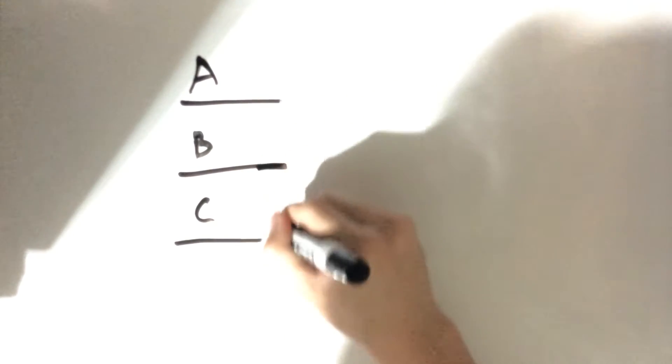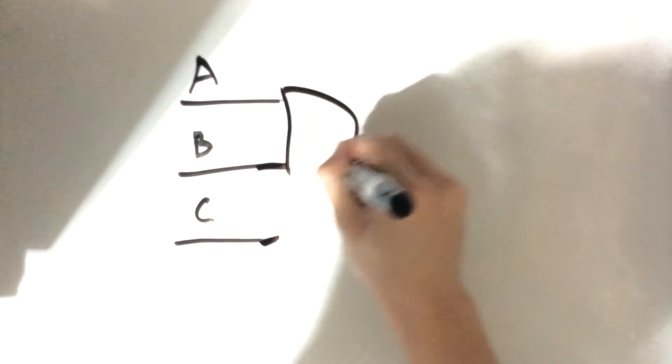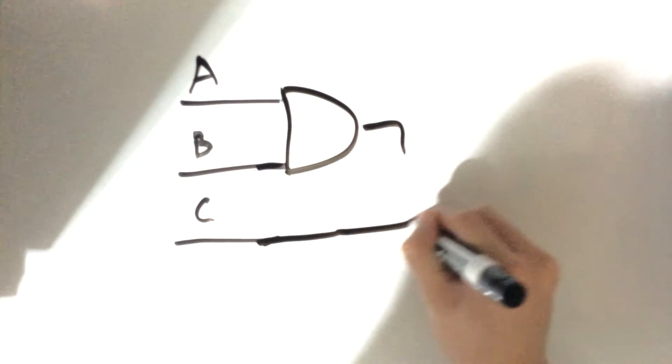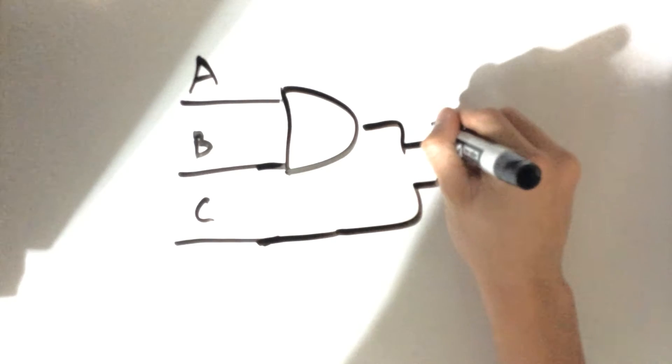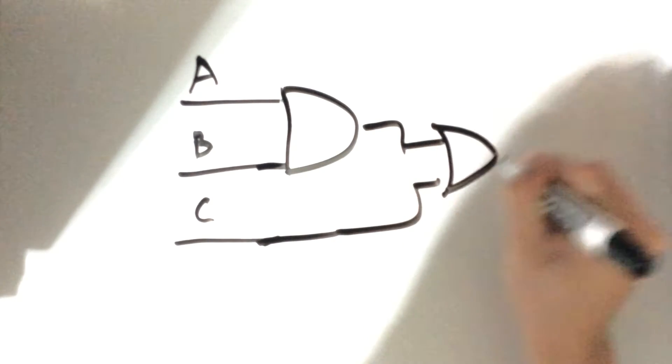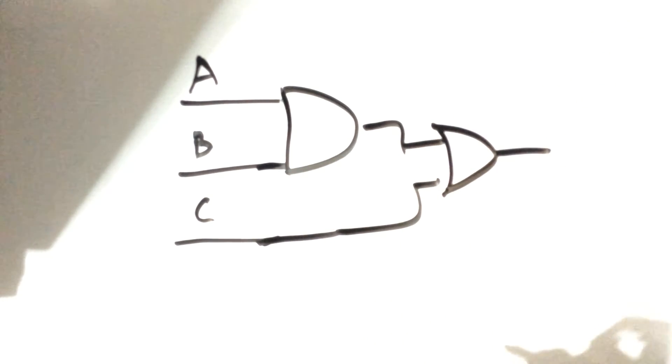Let me shorten this a little bit. We're going to have an AND gate right here, it's going to go here and it's going to go to an OR gate.